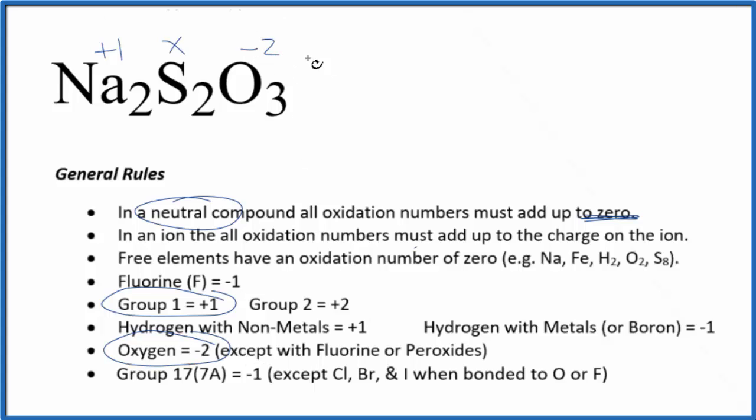We know that all of this is going to add up to zero since it's a neutral compound. We can just make an equation. We could say two times one, that's two, plus two times X, two X, three times minus two is minus six. That equals zero.